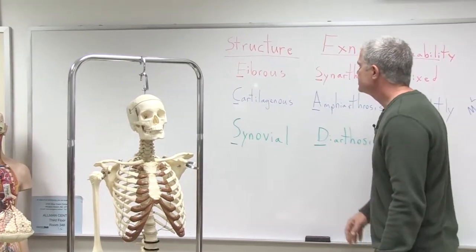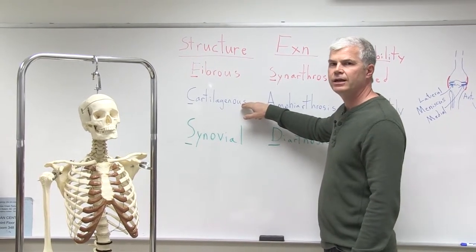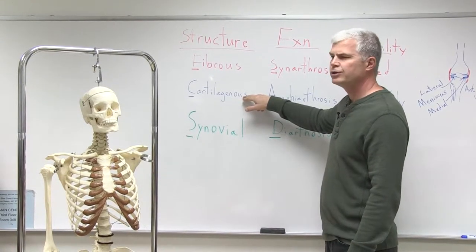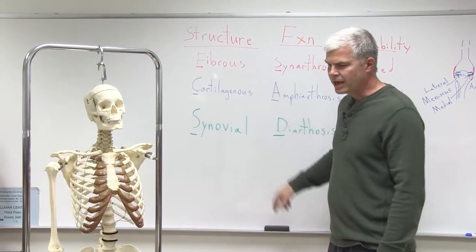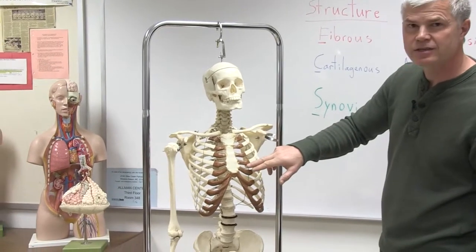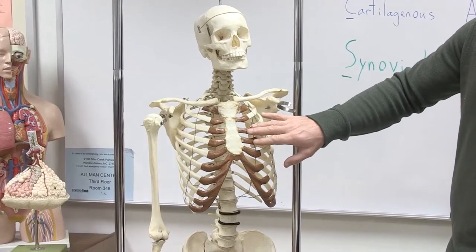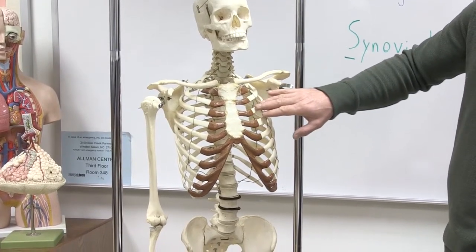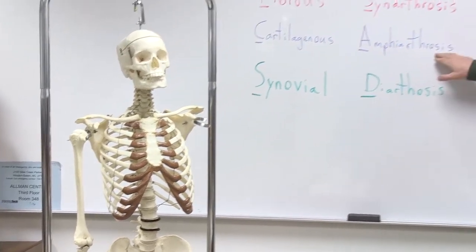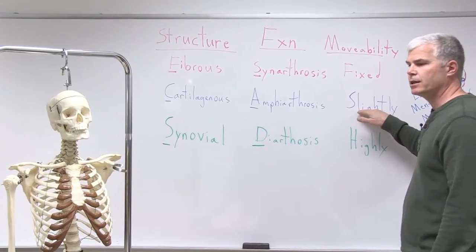The next type of joint is called the cartilaginous joint. They have a piece of cartilage — a softer tissue than bone, but still very tough connective tissue — that joins two bones together. There are some examples of those also along the axial skeleton. In brown here, we see the cartilages that join the ribs to the sternum. So these would be cartilaginous joints — made out of cartilage, joining a bone on one side to a bone on the other side. Functionally, they're called amphiarthrosis, which means they're slightly movable joints.